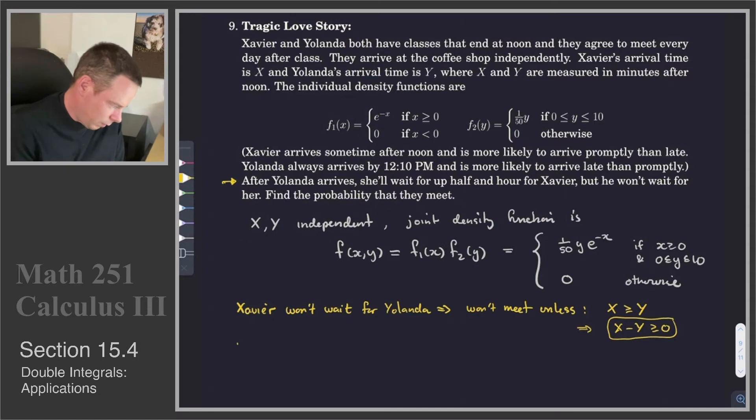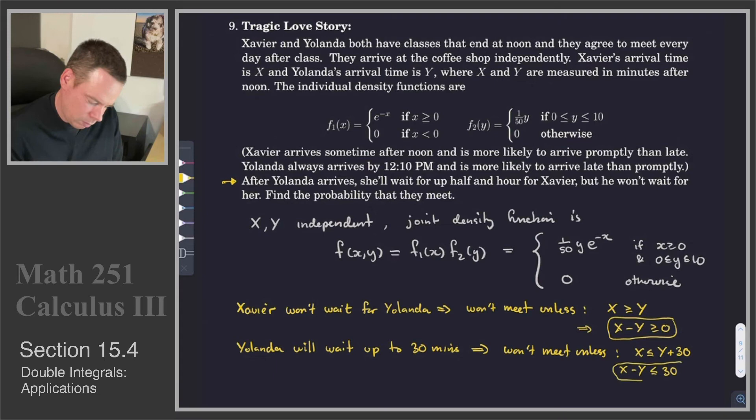What else do we have? Yolanda will wait up to 30 minutes. And so that means they won't meet unless Xavier has to arrive within 30 minutes of Yolanda's arrival time. So X better be less than Y plus 30. Or in other words, X minus Y has to be less than or equal to 30. So there's our other condition.